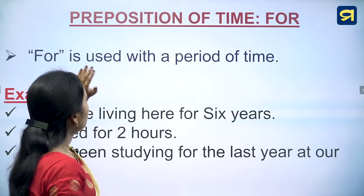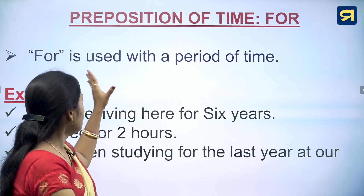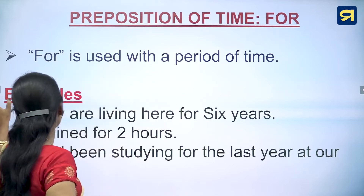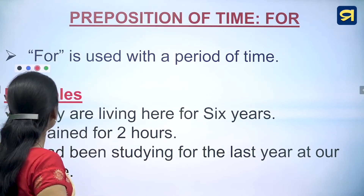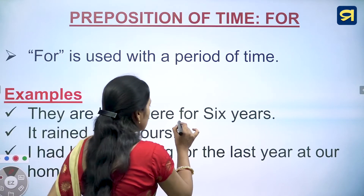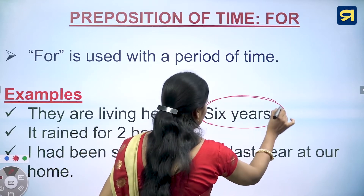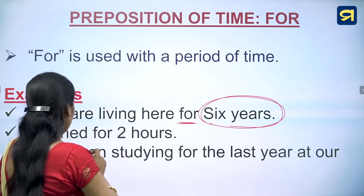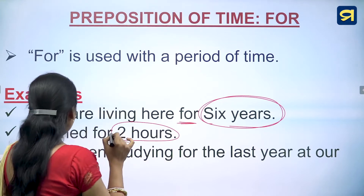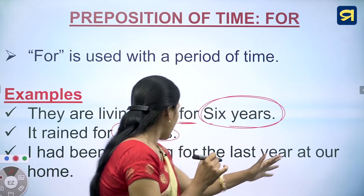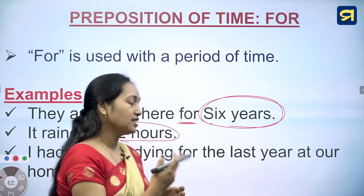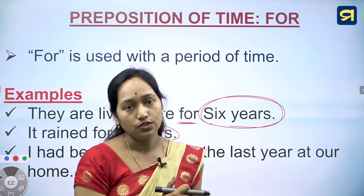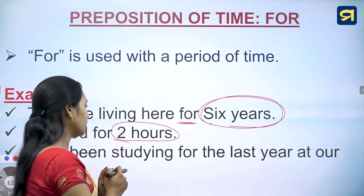Preposition of time 'for'. 'For' is used with a period of time. For example: they are living here for 6 years, it rained for 2 hours, and I have been studying for the last year. 'For' refers to a definite period of time.